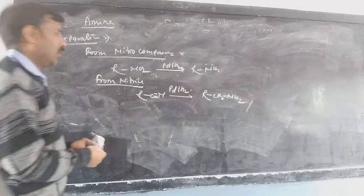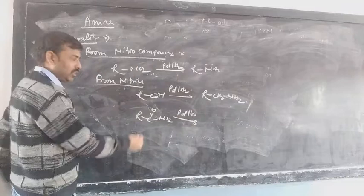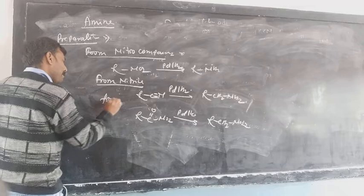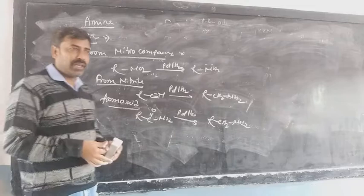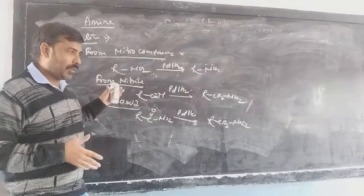If you are treating an amide, R-CO-NH2, again with the same reducing agent, reduction is needed for the preparation of amine and it gives R-CH2-NH2. All three of these reactions are identical reduction processes. This is the way for the preparation of amine — by the reduction of nitro group, by the reduction of nitrile, and by the reduction of amide.